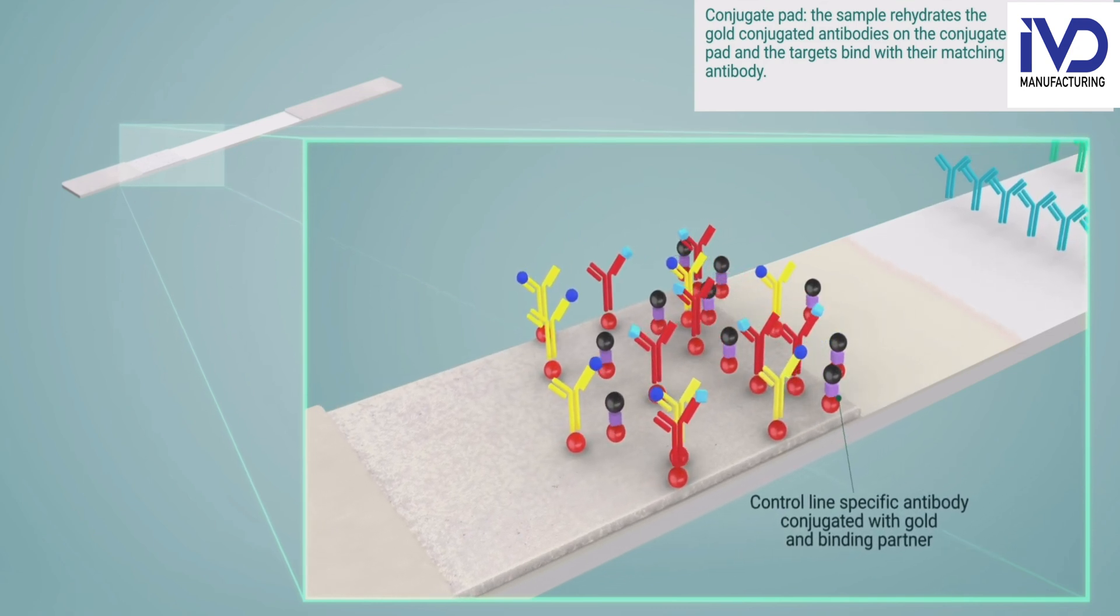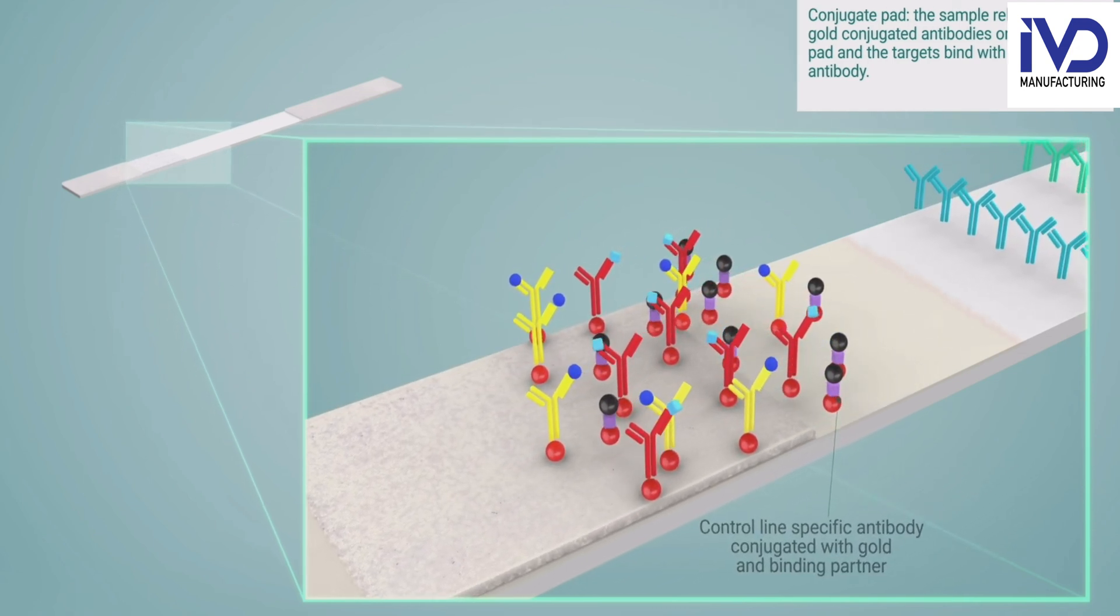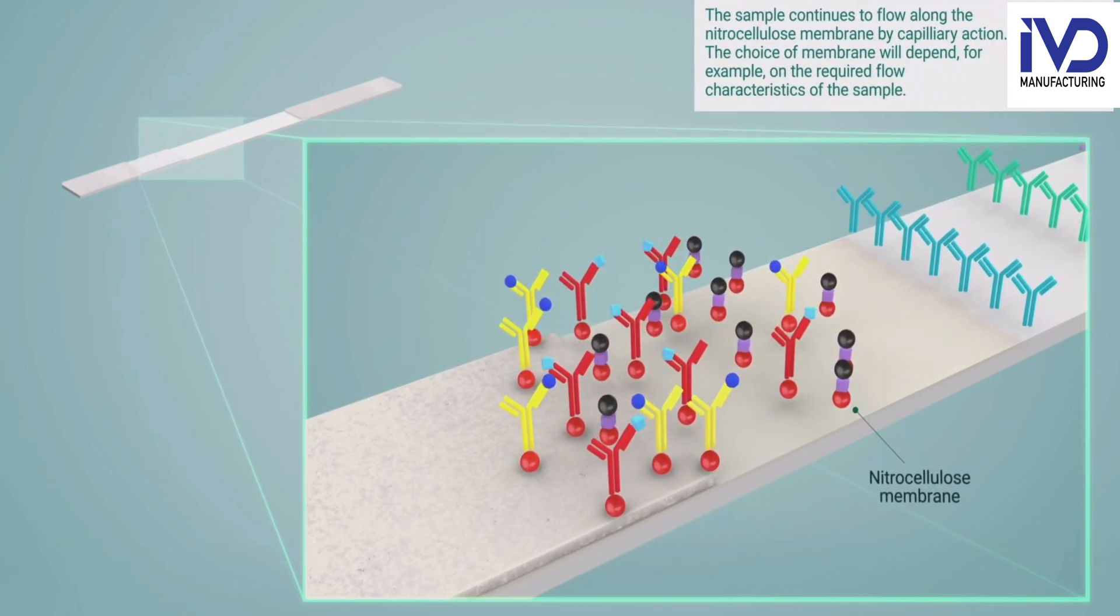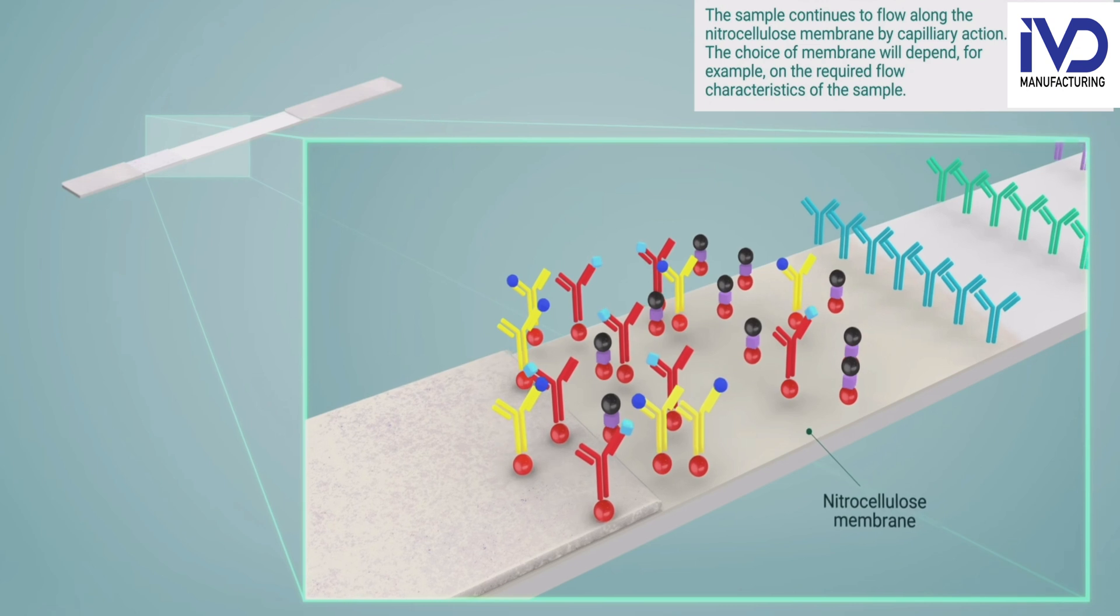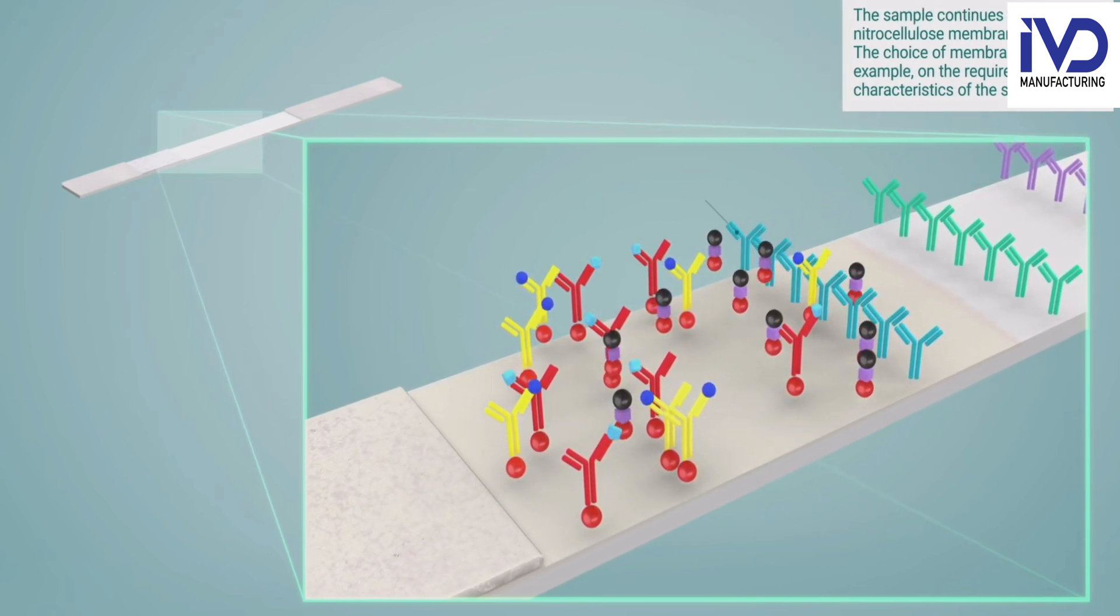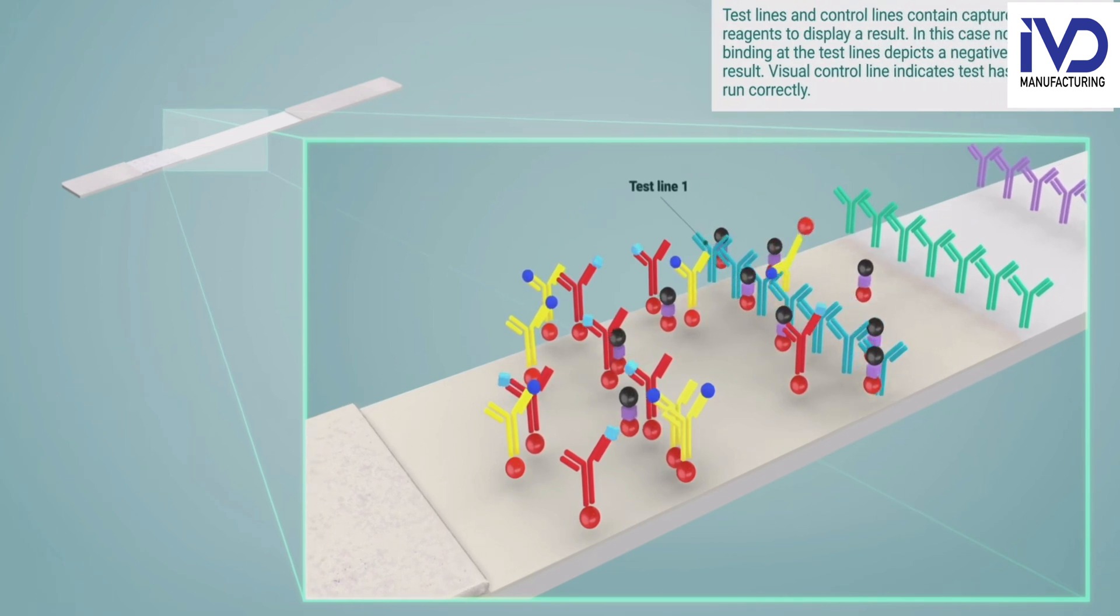These gold colloidal conjugated antibodies will then bind to the specific targets and will flow on the test strips. During their movement on the test strips, there are two more antibodies present called the captured antibodies.